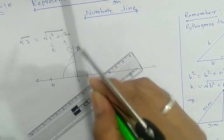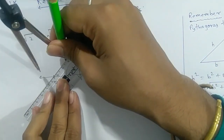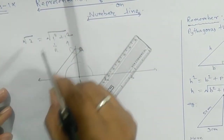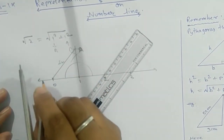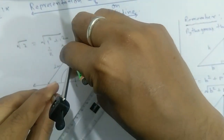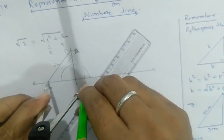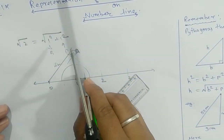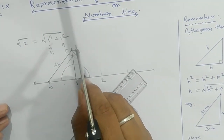Join 0 to A. This is your one unit base, this is your one unit perpendicular, and this diagonal will be your root 2. Take the length of this diagonal as a radius and draw an arc on the number line. Whatever intersecting point you get — that point is called root 2.